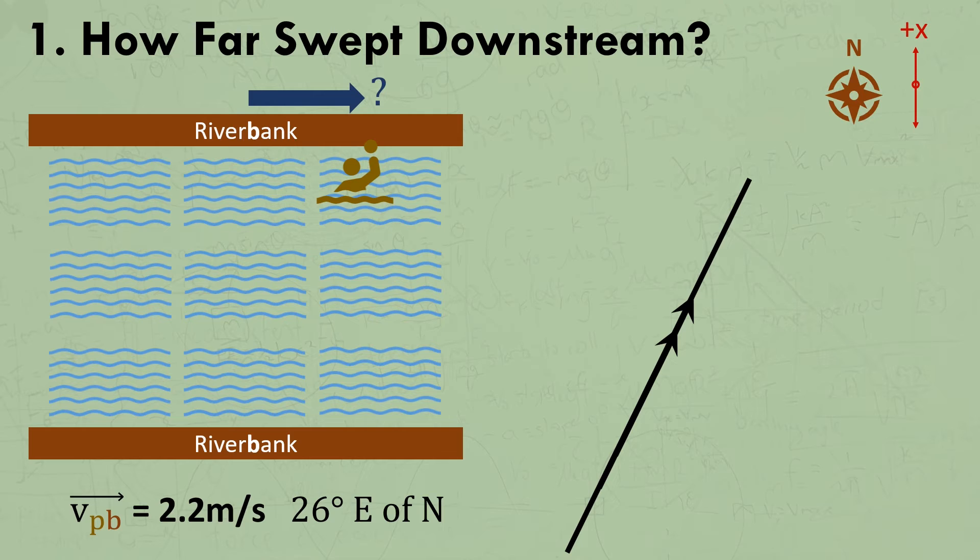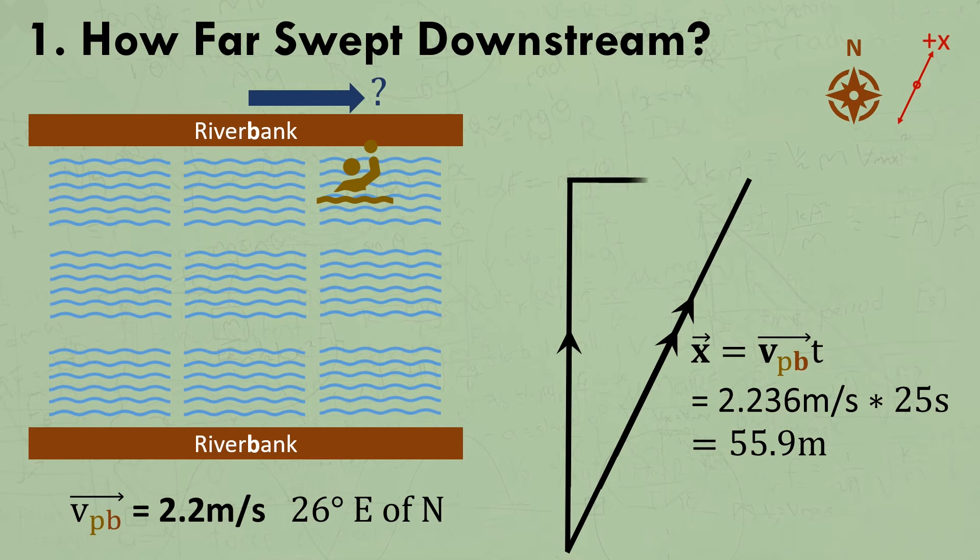So, whether they intend it or not, most students effectively rotate their axes and then draw a vector diagram of the student's displacement relative to the bank. So, knowing that she swims for 25 seconds, they calculate that she'll swim a total distance of 55.9 metres, and then use trigonometry to calculate how far she'll be swept downstream during that time.